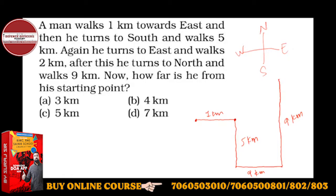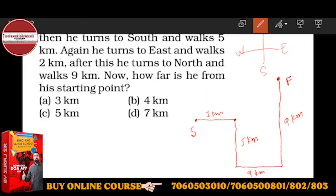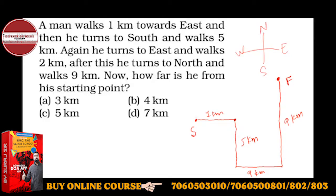So this is the starting point — I write S for starting point — and this is the finishing point — I write F. So we have the starting point and finishing point. The shortcut — the shortest distance — is what you have to calculate, and this will be the shortest distance.